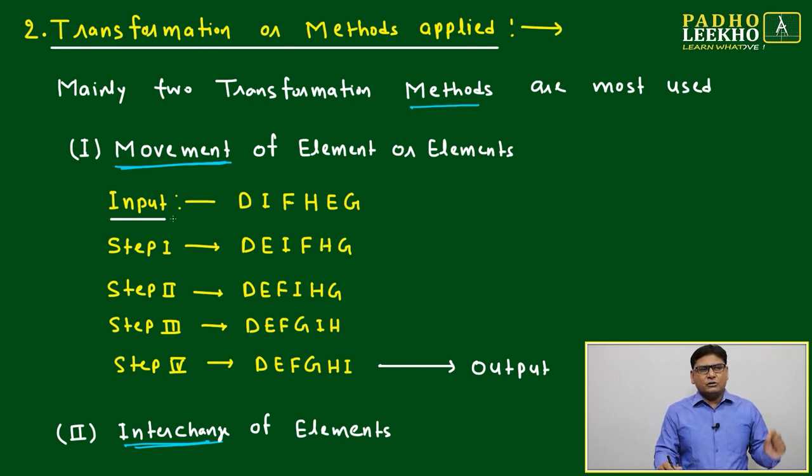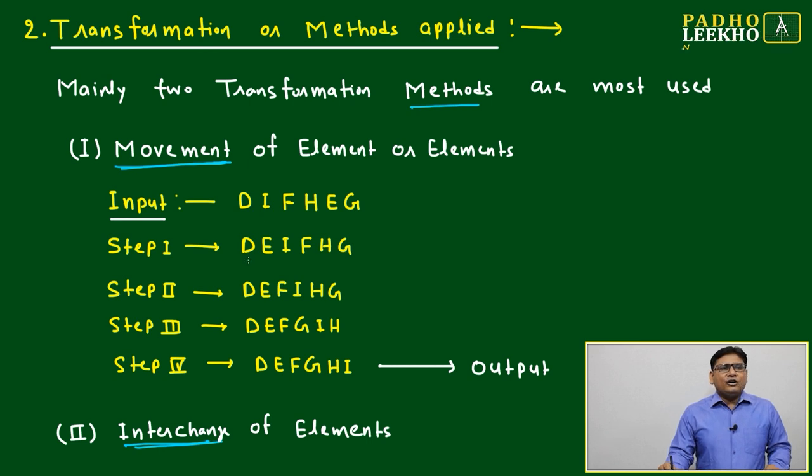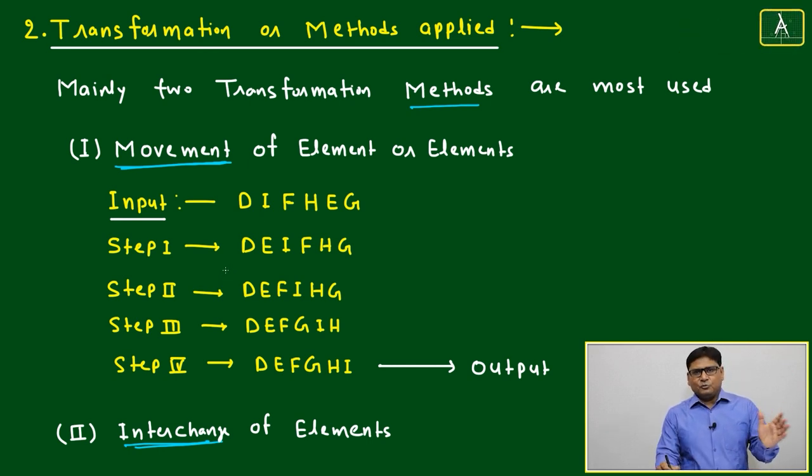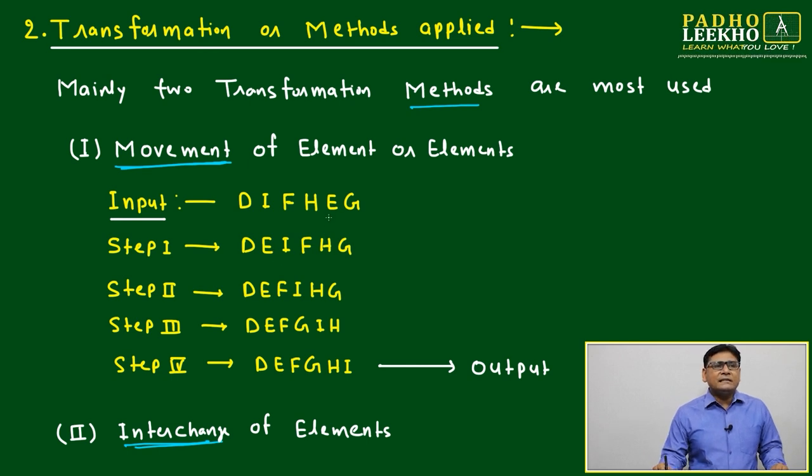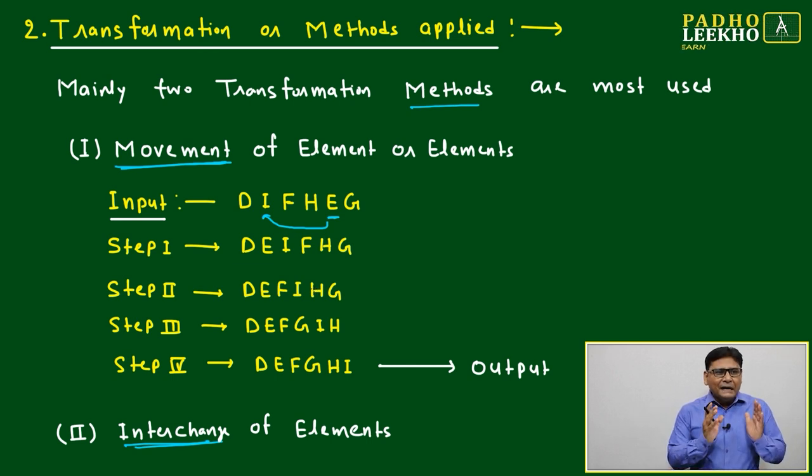We'll see based on this example how these two are different. Suppose the input is D I F H E G. If no instruction is given, we'll try to arrange in ascending order - lower to higher alphabet. D is already in the best position, the first position, and D is the lowest numbered alphabet. Then what we need after D is E. Where is E? E is here. E must move here. If we are doing movement of element, between D and I we sandwich the E, and remaining positions will be as it is.